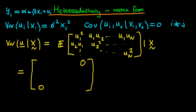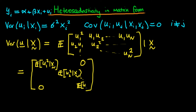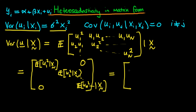For the diagonal components we need to be more careful. Taking the expectations operator inside the matrix, the first diagonal component is the expectation of u1 squared given X, the second is the expectation of u2 squared given X, and so on to un squared given X. Notice that each of these diagonal components is in the same form as the stated variance — if the expectation of ui given X is zero, then the variance is just the expectation of ui squared. They mean exactly the same thing.